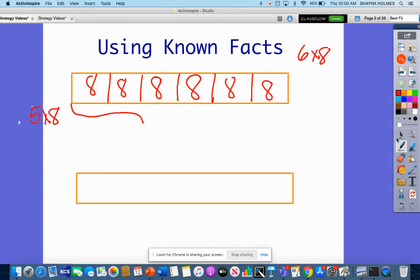I'm going to block off five of these - one, two, three, four, five. Five times eight. I know that five times eight is the same as eight times five, so five groups of eight would be 40.